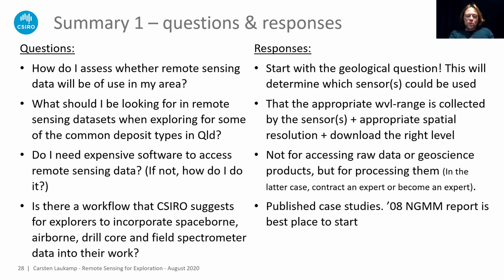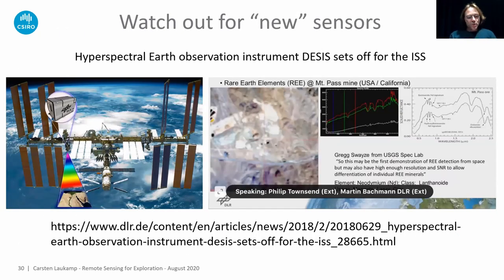For a recommended workflow, the 2008 NGMM report is probably the best place to start — it shows how to use airborne and space-borne spectral data, how to ground-validate them, and how to compare with geochemistry. Finally, for those interested in rare earth elements, there is an instrument on the International Space Station called DESIS that has been used to map rare earth elements from space. Thank you for your attention.